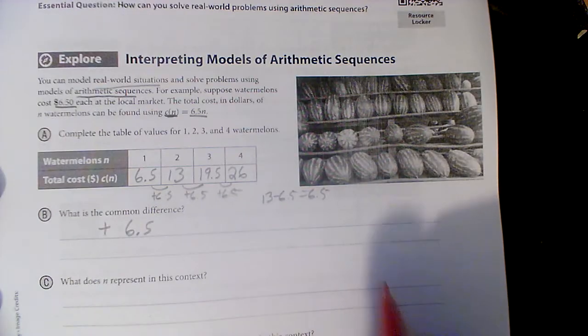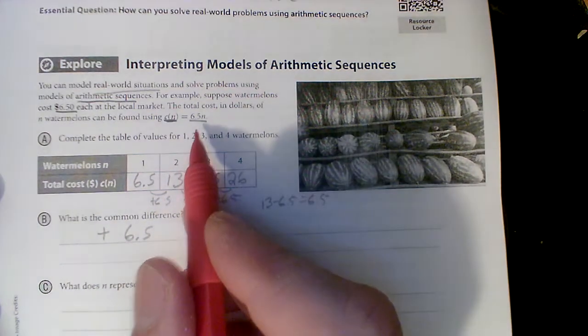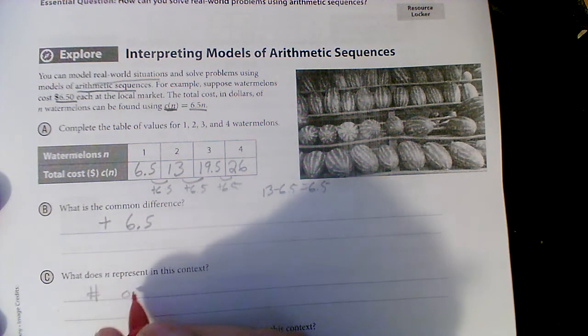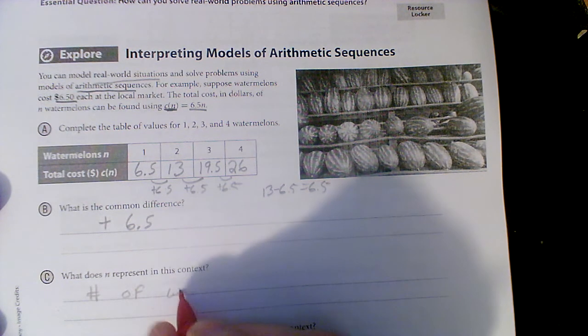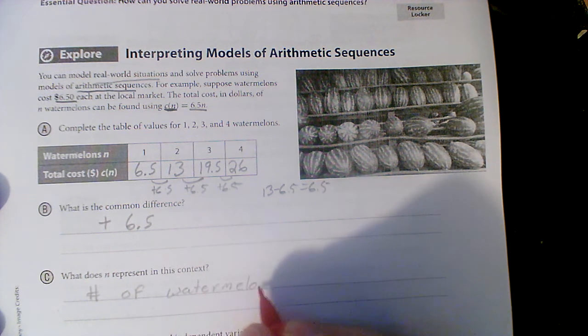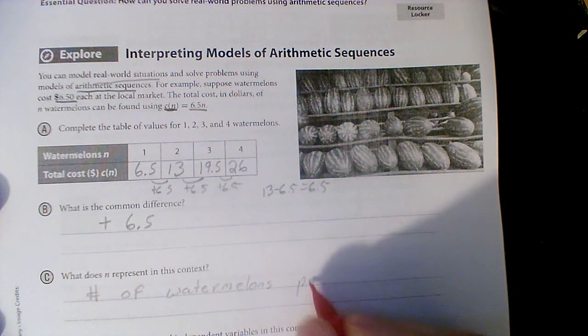What does n represent? Well, n in this case represents the number of watermelons, either sold or bought. I think since it's costing, we're probably doing the buying. Watermelons purchased.